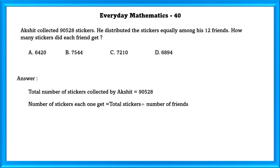Number of stickers each one got is equal to total stickers divided by number of friends, which is equal to 7,544.